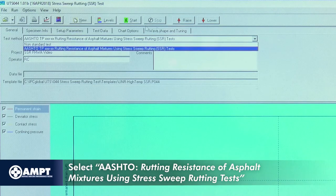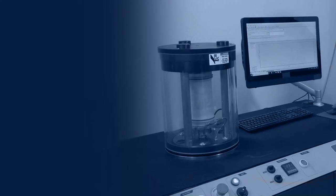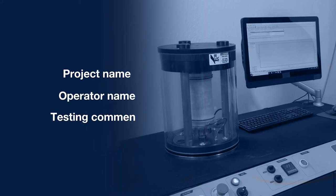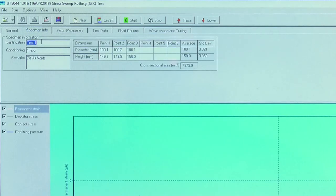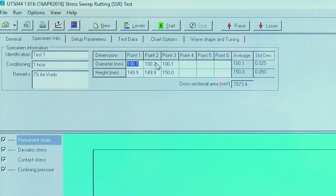Under the general tab, select AASHTO rutting resistance of asphalt mixtures using stress sweep rutting tests. Enter project name, operator, as well as any testing comments. Under the specimen info tab, enter specimen identification, conditioning time, percent air void, and diameter and height of the specimen.